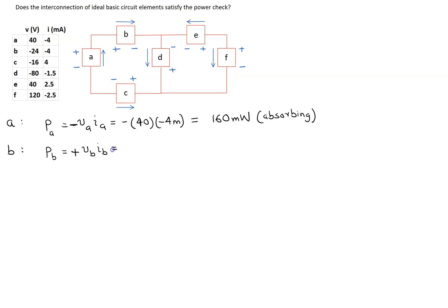Now we just need to substitute the values. So the voltage is minus 24 and the current is minus 4 milliamps. And this gives an answer of 96 milliwatts. This is a positive value, so this means element B is also absorbing power.